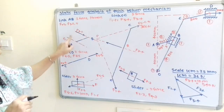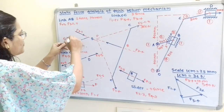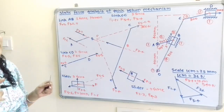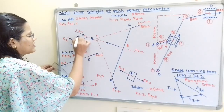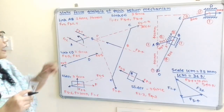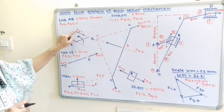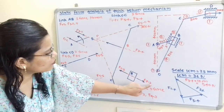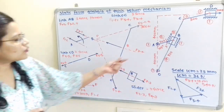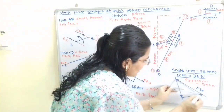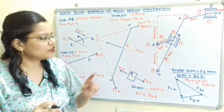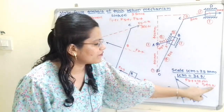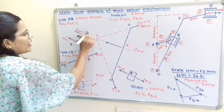Link AB is a two-force and one-torque member — forces are parallel but opposite in direction. These two forces form a couple in the clockwise direction, so the torque must be in the anticlockwise direction. To find the magnitude, we measure F of 3 to 4 from the force polygon: the length is 15 cm, and with scale 1 cm equals 36 N, we get 15 × 36 = 540 N. So F of 3 to 2 equals 540 N.